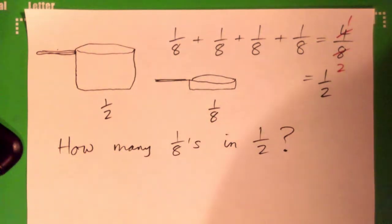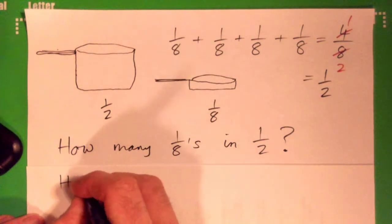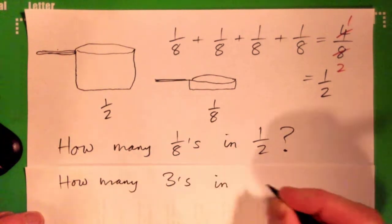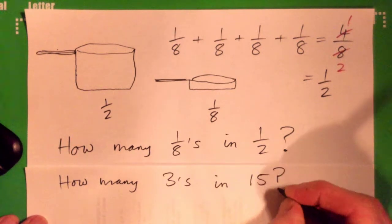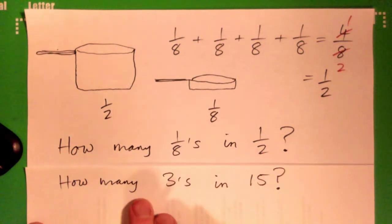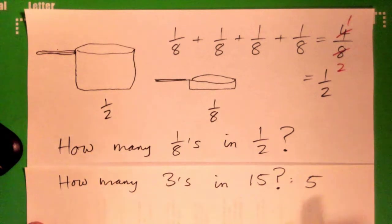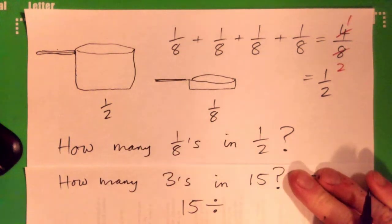Let me ask you a simpler question. Let me ask you a simple one. Give me the division for this. How many threes are contained in 15? What would the division look like? How many threes are in 15? What's the answer, by the way? Five. How would you get that by dividing?